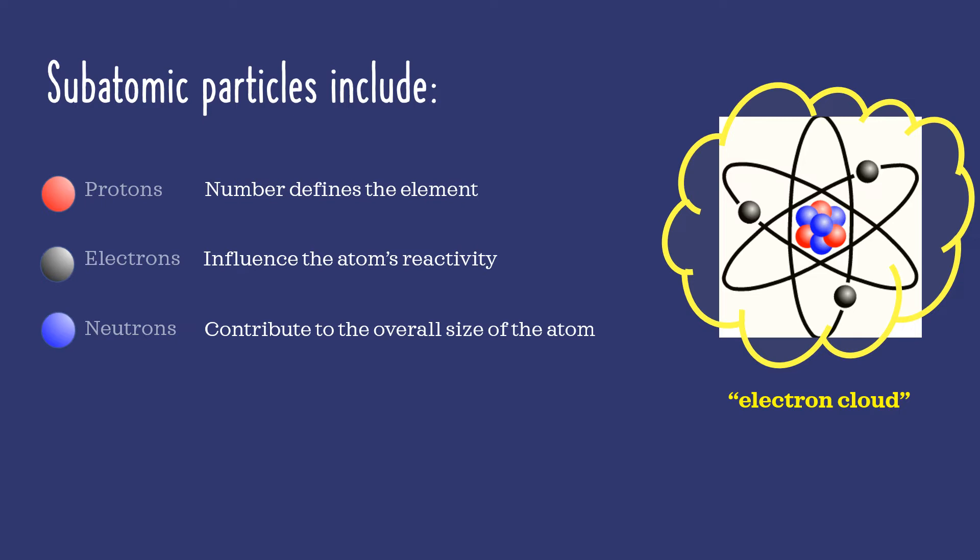While the number of protons in an element's atoms is always the same, and usually matches the number of electrons, the number of neutrons may vary. In other words, atoms of an element may have slightly different numbers of neutrons.